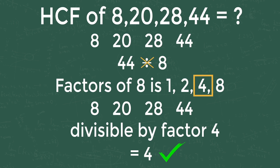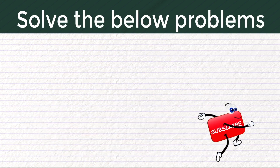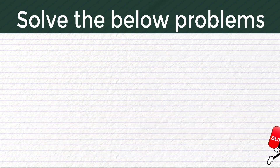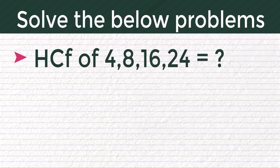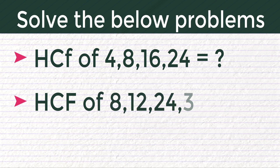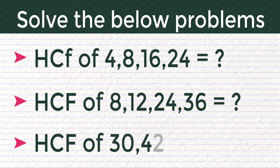If you understand the trick, try solving the below problems and comment your answers. 1) HCF of 4, 8, 16, and 24 is equal to what? 2) HCF of 8, 12, 24, and 36 is equal to what? 3) HCF of 30, 42, and 135 is equal to what? The answer to problem 3 is 1.